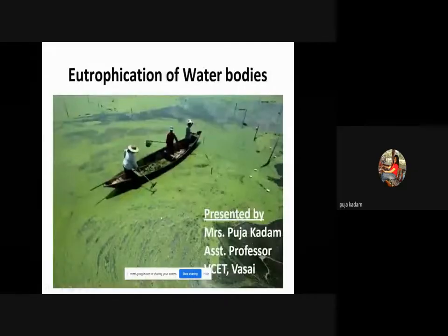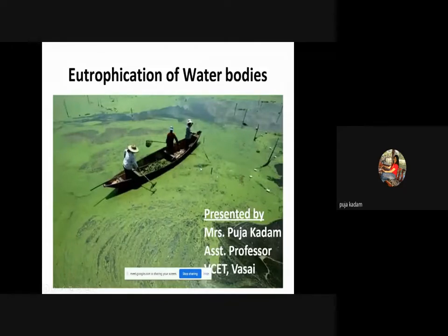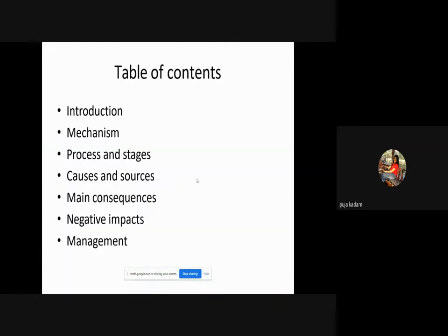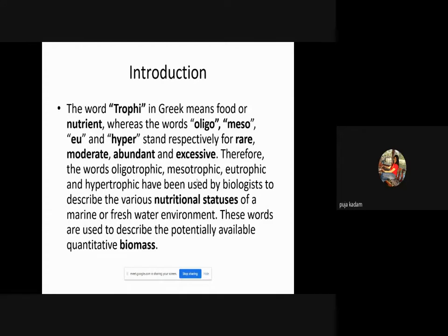The green color all over the water body is nothing but the algal bloom, and this concept is called eutrophication. In this topic we will cover the introduction, mechanism, process, stages, causes and sources, consequences, impacts, and how you can manage eutrophication.